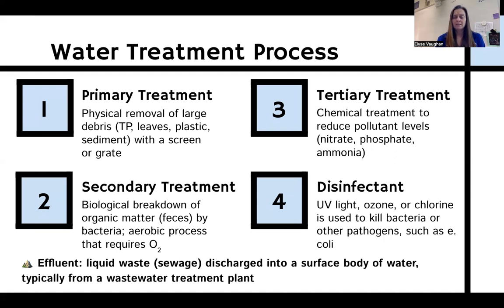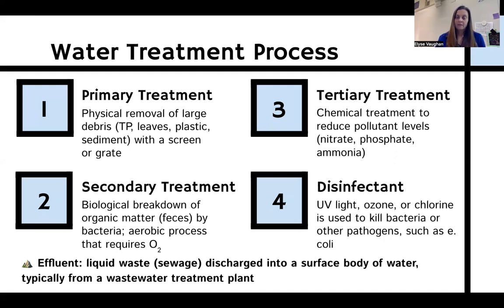The fourth step is disinfection. Depending on the treatment facility, it might be as simple as chlorine, or a more sophisticated method like UV light or ozone to kill bacteria and pathogens such as E. coli. Once that process is complete, what remains is considered effluent — the liquid waste discharged into a surface body of water from a wastewater treatment plant.